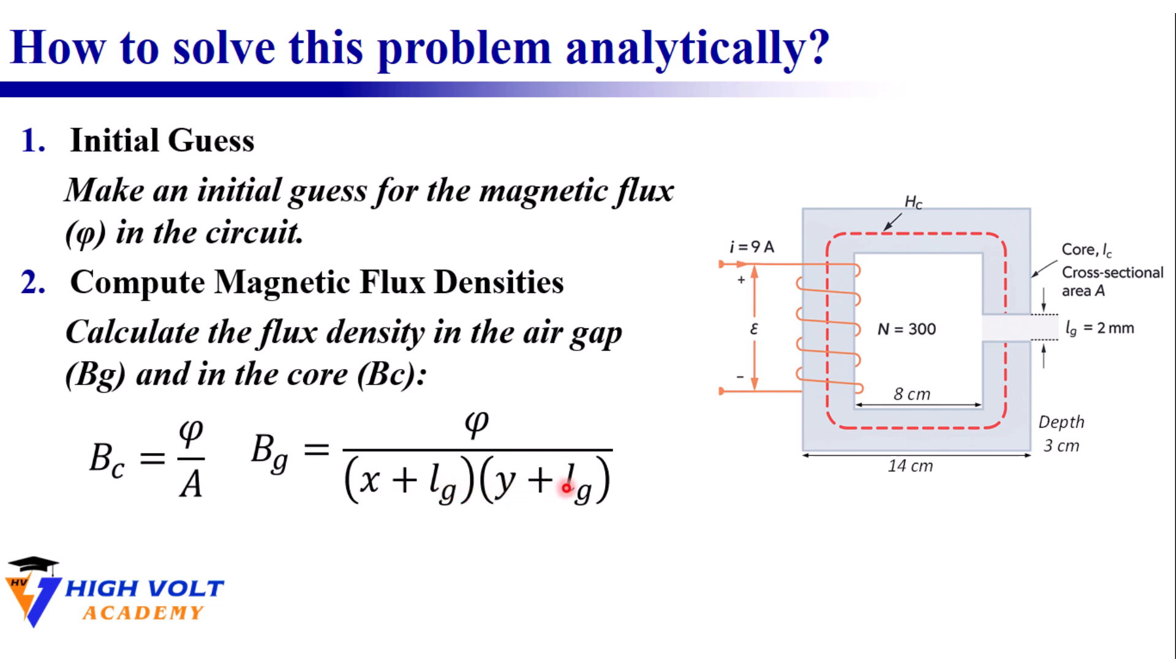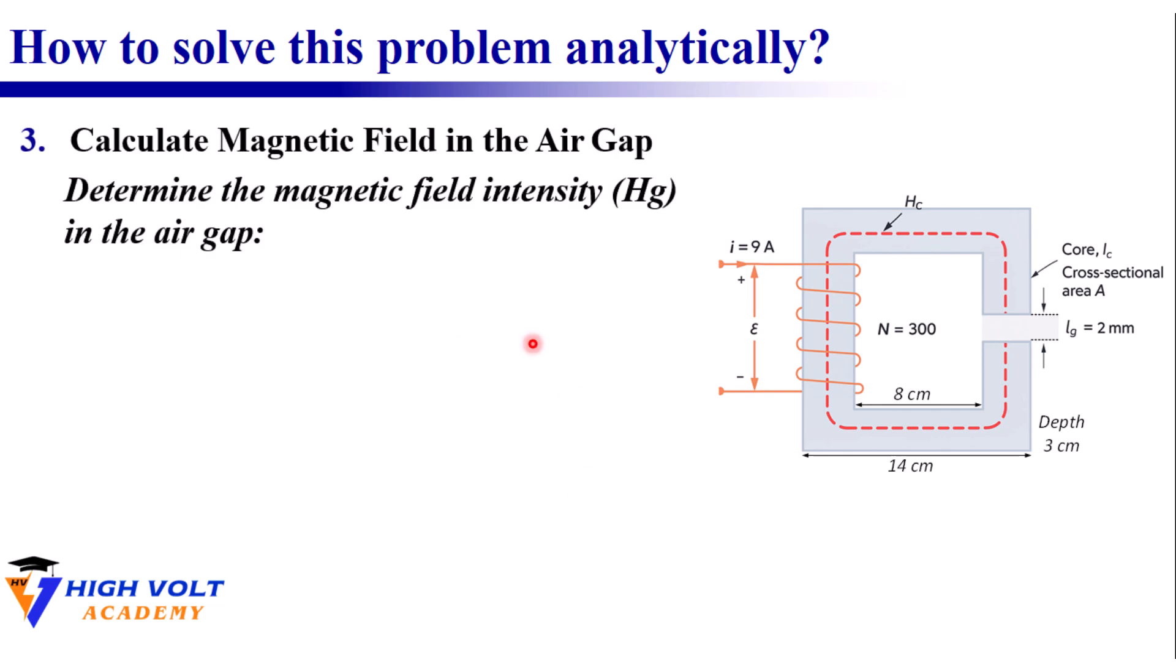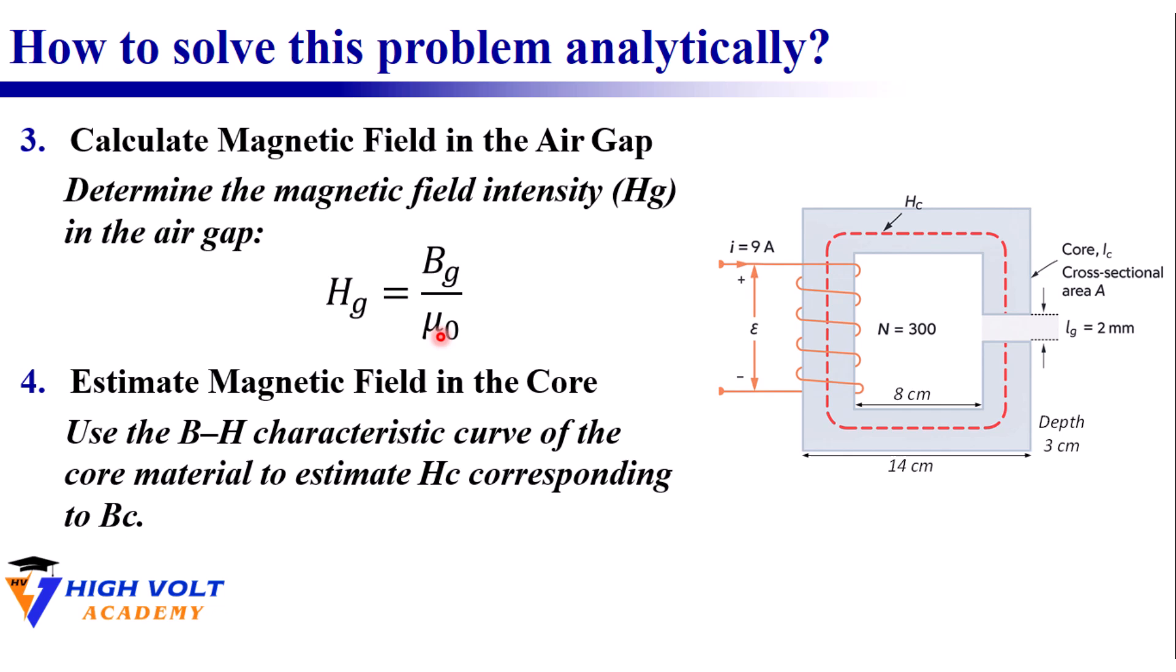If the width is x and the depth is y, we use (x + lg) multiplied by (y + lg) where lg is the air gap length. Next we calculate the magnetic field strength in the air gap Hg. Because air is a linear material this part is simple: we just divide Bg by the permeability of free space μ0.